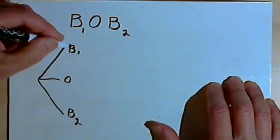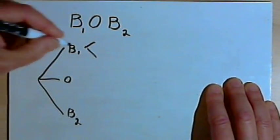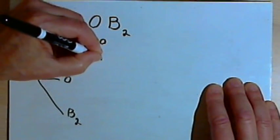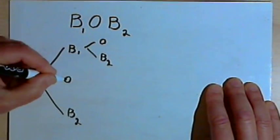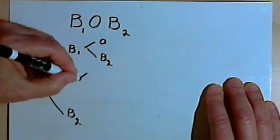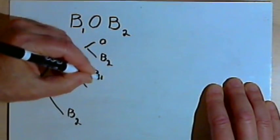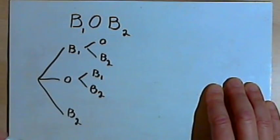If I started out with B sub 1, then my second letter might be either O or B sub 2. And if my first letter is O, my second letter might be B sub 1 or B sub 2, and so on.